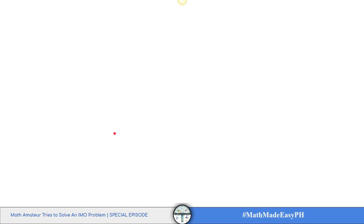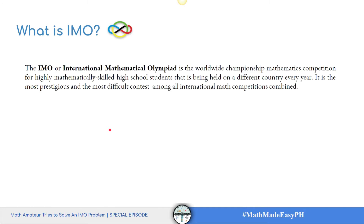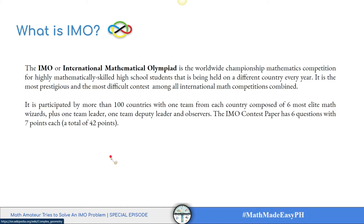Before that, I'll give a brief introduction to what the IMO is. The IMO, or the International Mathematical Olympiad, is the worldwide championship mathematics competition for highly mathematically skilled high school students, held in a different country every year. It is the most prestigious and most difficult contest among all international math competitions. It is participated by more than 100 countries, with each team composed of six elite math wizards plus one team leader, one deputy leader, and observers.